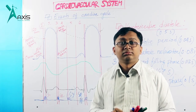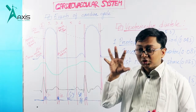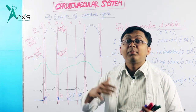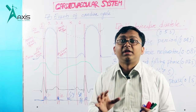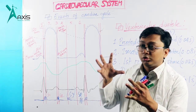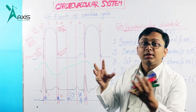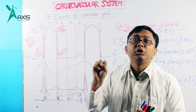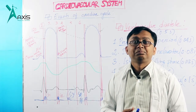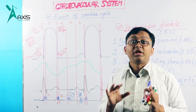With S4, the atrium contracts against a hypertrophic or stiff left ventricle. Because the ventricle is thick and stiff, the atrium has to forcefully contract to push blood into it. So S4 occurs because the atrium contracts forcefully against a stiff ventricle — this is the key difference with S4.